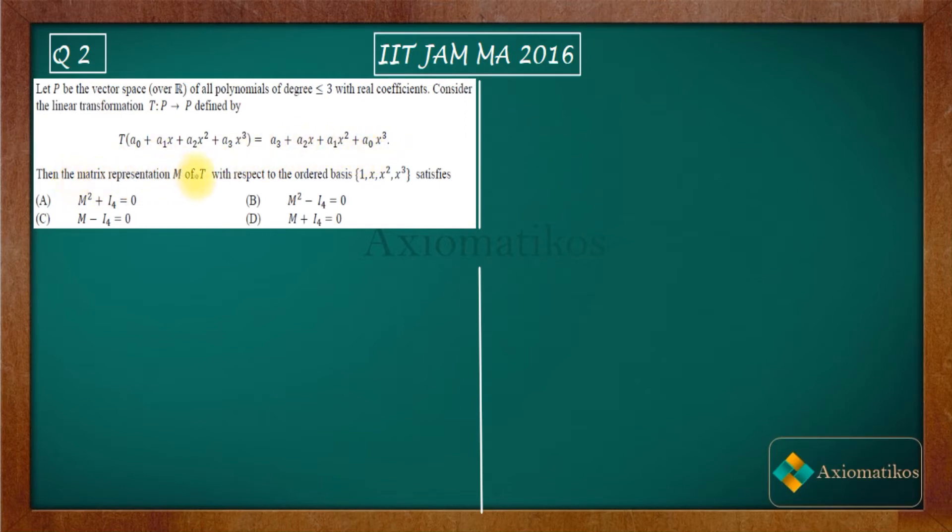Then the matrix representation M of T with respect to the ordered basis. We have an ordered basis for which we have to find out the matrix representation and also we have to see which of these properties that matrix representation will satisfy.